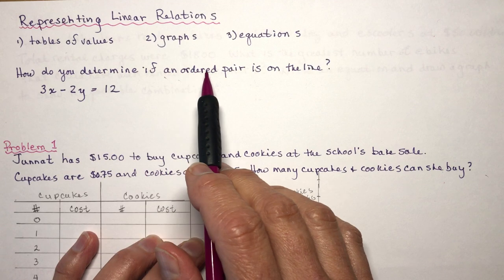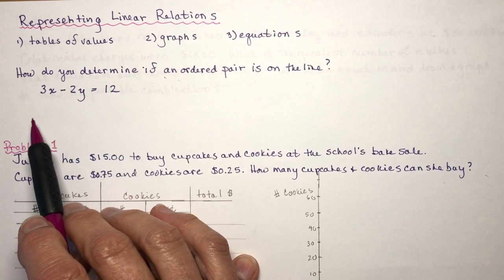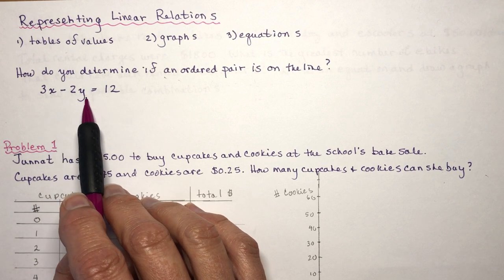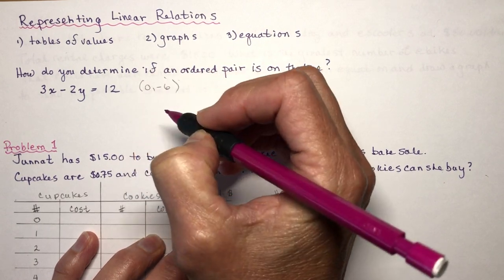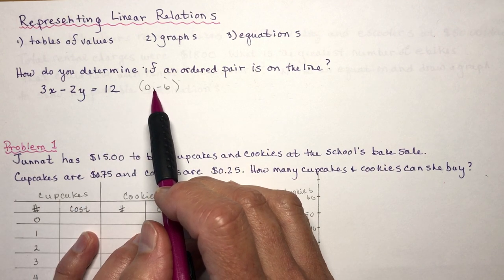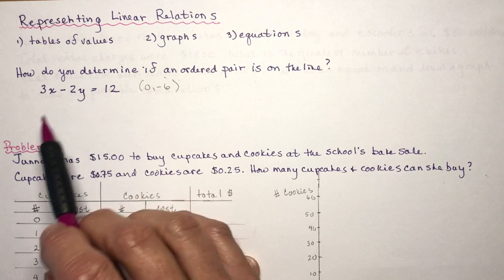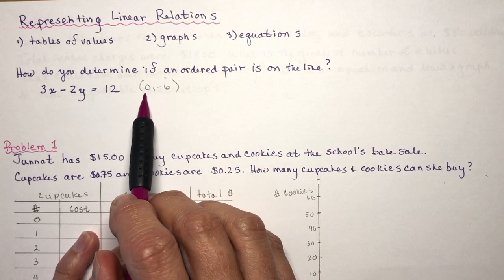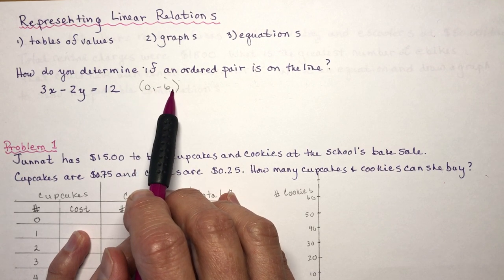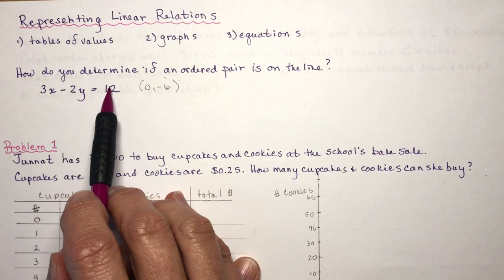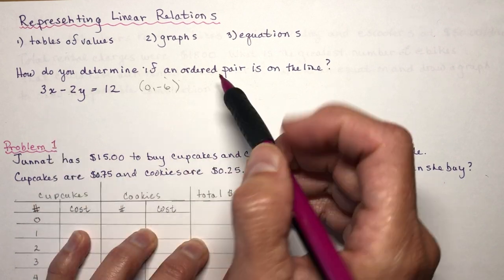So how do you determine if an ordered pair is on the line? Let's say I gave you this equation of a line, 3x - 2y = 12. How do I know it's a line? It's degree of 1. I could rearrange this into y equals mx plus b format. If I asked you is the point (0, -6) on this line, in order for an ordered pair to represent a point on this line it has to satisfy the equation.